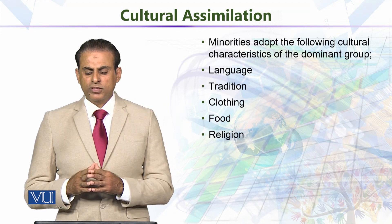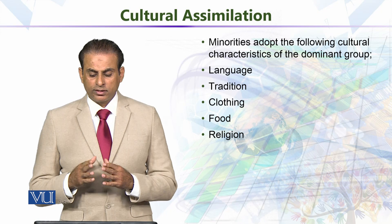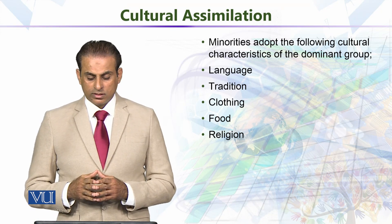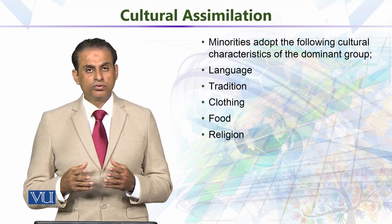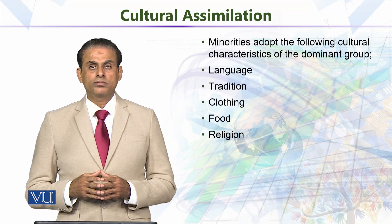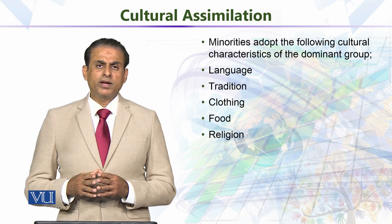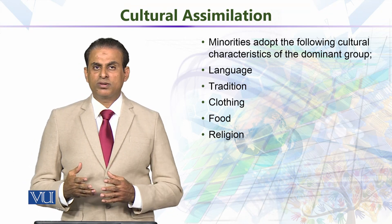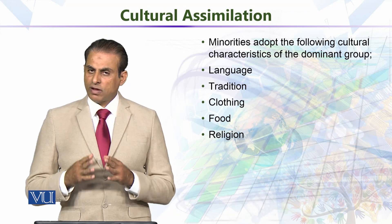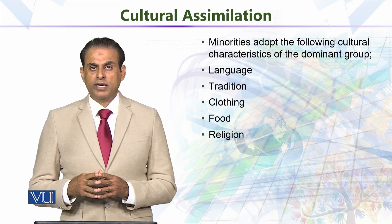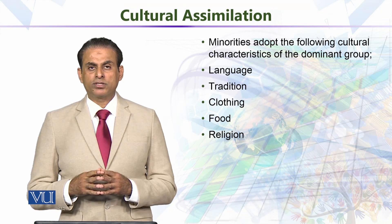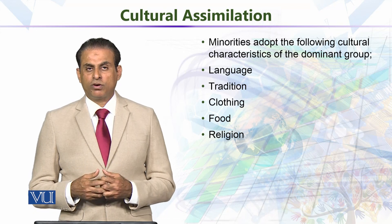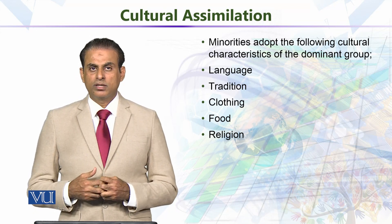Minorities adopt the following cultural characteristics of the dominant group: language, tradition, clothing, food, and religion. However, it is very difficult to say that religion is adopted — other things are definitely adopted, but we cannot say with certainty that religion is going to be transformed through migration or immigration.